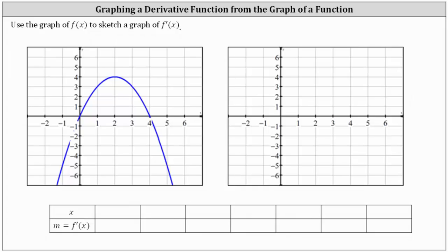We're asked to use the graph of f of x to sketch the graph of f prime of x, or the derivative of f of x. The derivative function values are equal to the slopes of the tangent lines to f of x at given values of x. So what we'll do is sketch several tangent lines to the graph of f of x, estimate the slopes of the tangent lines, and record the information below.